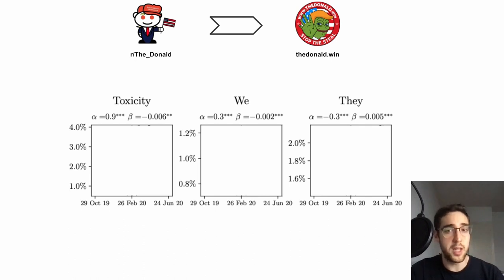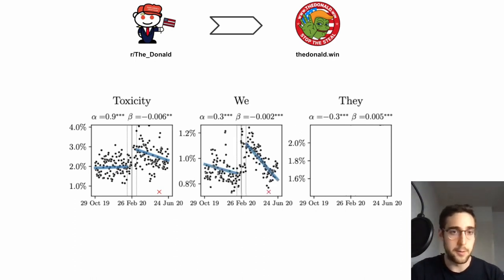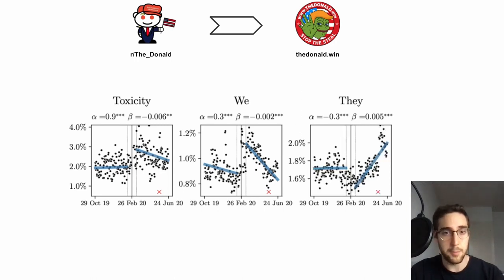Similarly, we can also run the analysis with the radicalization-related signals previously described. In here, we find an increase in these signals overall. We find an increase in toxicity, in first-person plural pronouns, and in third-person plural pronouns. However, the pronouns increased in very distinct ways. After the ban, there was a sudden increase in first-person plural pronouns, suggesting a focus on the in-group, but eventually there was a decrease, and then their usage returned to pre-intervention levels. On the contrary, for third-person plural pronouns, we find that there was a sudden decrease following the ban and a continuous increase as time went by.